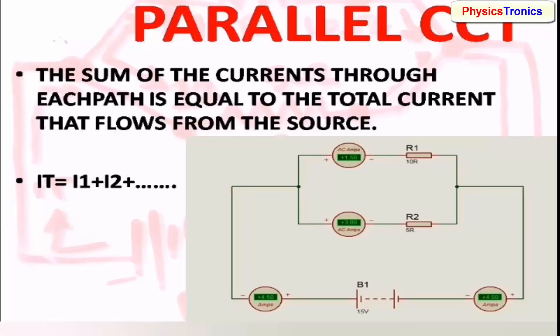IT is equal to I1 plus I2 plus I3, current flowing from branch number 1 plus branch number 2 plus branch number 3, and so on.